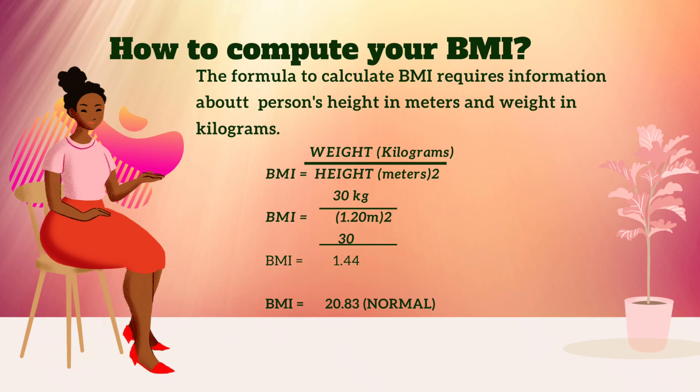How to compute your BMI? The formula to calculate BMI requires information about a person's height in meters and weight in kilograms. BMI equals weight in kilograms divided by height in meters squared. For example, you have 30 kilograms in weight divided by 1.20 meters squared. BMI equals 30 divided by 1.44. The BMI is equal to 20.83 — that is normal weight.